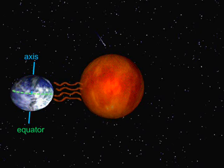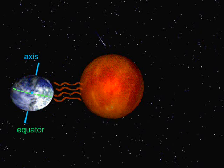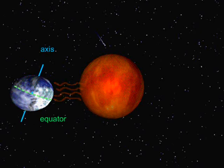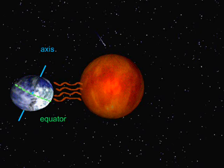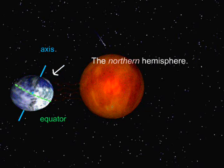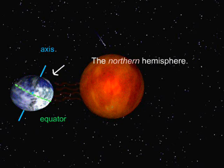If you could view Earth from outer space, you would notice that the North Pole and the South Pole are not at the very top and bottom of the Earth. In fact, the poles are slightly tilted to the right at 23.5 degrees. In this position, the part of the Earth that receives the most direct heat and light from the Sun is the Northern Hemisphere.